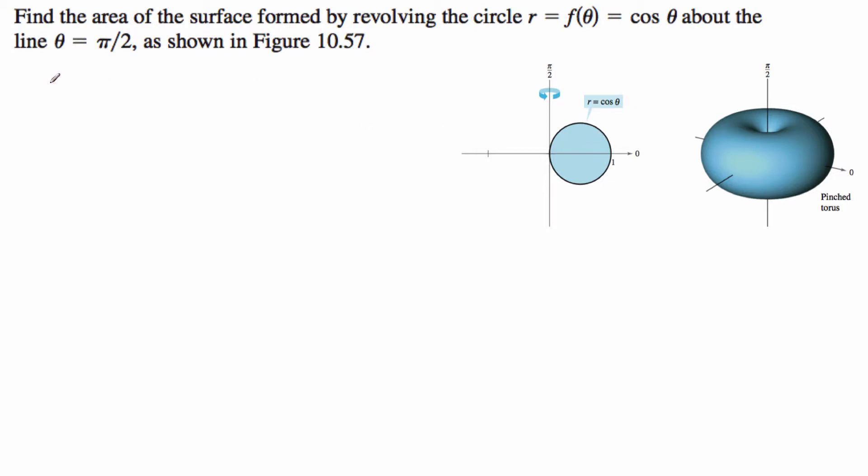So the surface area is 2π times the integral from alpha to beta. I'm going to use r cos(θ) times the square root of r² plus r'² dθ. So r is cosine, r' is -sin(θ).